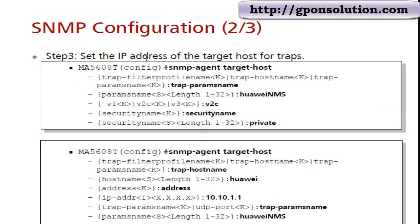Set the IP address of the target host for trap: SNMP assign target host trap, host name hoi NMS, version 2, security name private. SNMP assign target host trap, host name hoi, address is the server IP for trap.